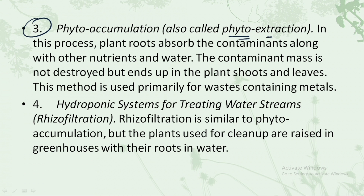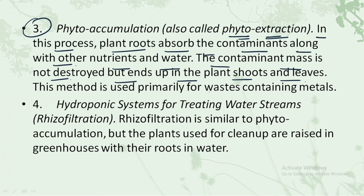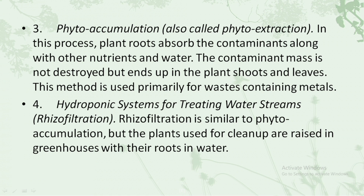The third mechanism is phytoaccumulation, also called phytoextraction. In this process the plant roots absorb contaminants along with other nutrients and water. The contaminant mass is not destroyed but ends up in the plant shoots and leaves. This method is primarily used for waste containing metals. As the name suggests, there is accumulation of the toxic substance into the plant shoots and leaves.